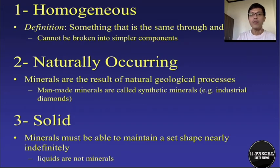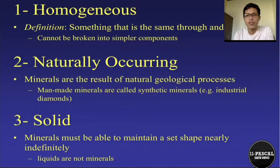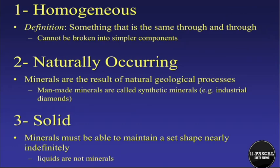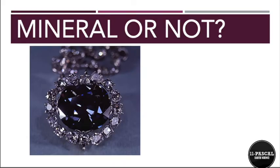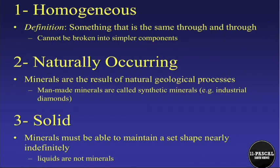Number one: homogeneous. What do we mean by homogeneous? Homogeneous means something that is the same through and through and cannot be broken into simpler components. An example of this is the blue diamond shown earlier — all throughout this substance, it is made of carbon, and it cannot be broken into any simpler components.